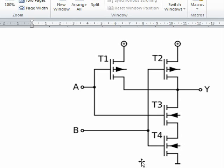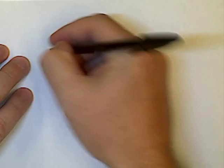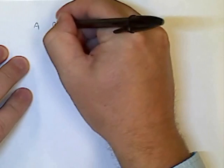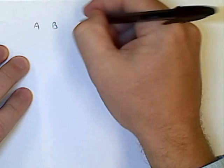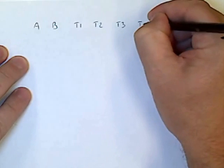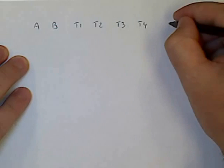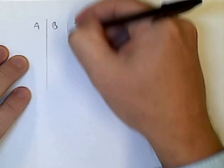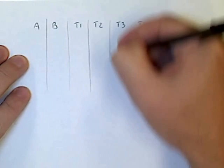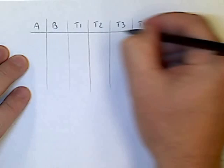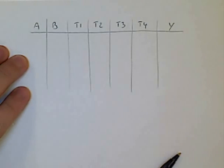If we were to look at a truth table for this, it would look something like this. So we're going to have our two inputs, A and B, and let's T1, T2, T3, T4 and Y. Now we're going to use a shorthand notation where zero represents a low voltage.